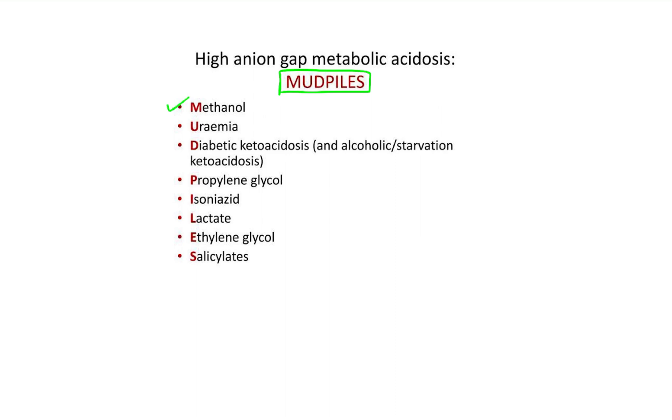M for methanol poisoning, U for uremia, D for diabetic ketoacidosis, P for propylene glycol poisoning, I for isoniazid toxicity, L for lactic acidosis, E for ethylene glycol poisoning, and S for salicylate poisoning.